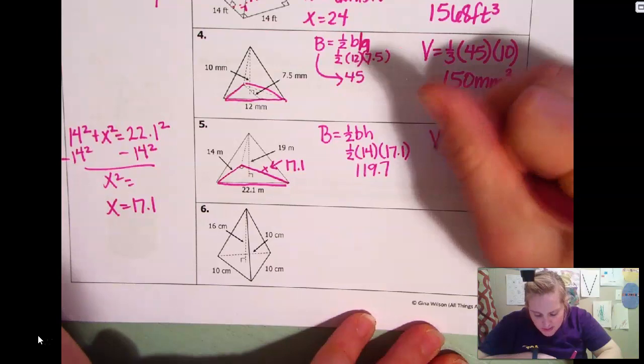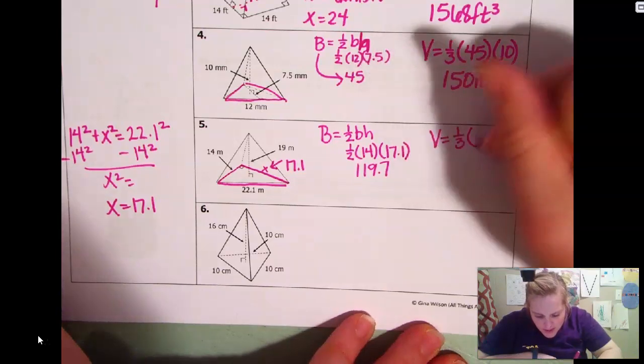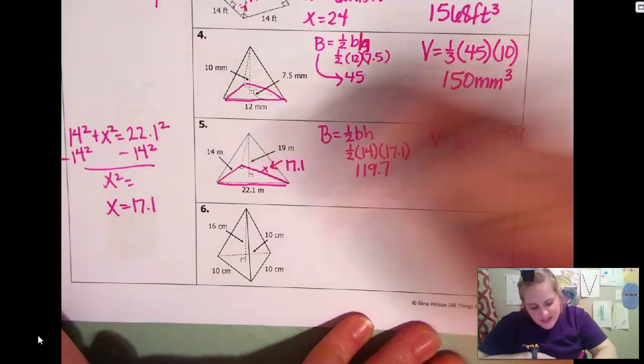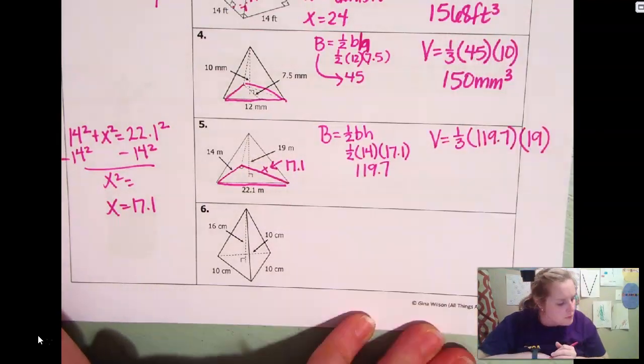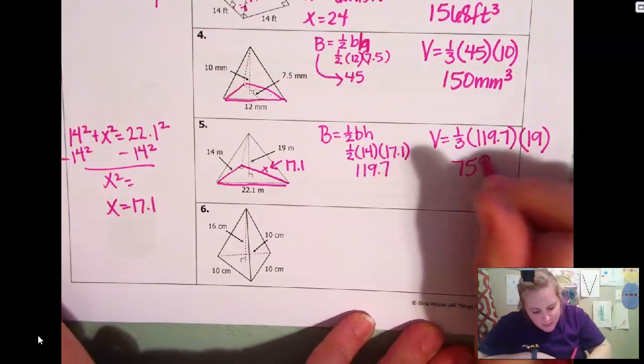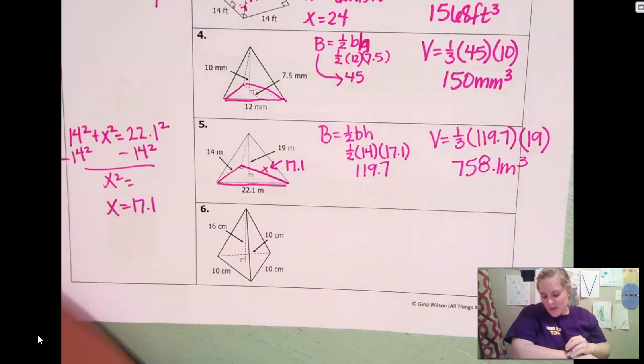So your volume is going to be one third big B and then the height, which they identify as 19. You plug that in your calculator. The answer is 758.1 meters cubed. Okay.